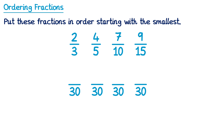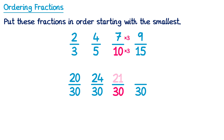So we're going to rewrite all of the fractions as something over 30. How do we get from 3 to 30? That's multiplied by 10, so we multiply the 2 on the top by 10 as well, which is 20. For 4 fifths, how do we get from 5 to 30? Multiplied by 6, so we multiply the 4 on top by 6 and 4 times 6 is 24. For 7 tenths, how do we get from 10 to 30? Multiplied by 3, so we multiply the 7 on top by 3, which is 21. And finally 9 fifteenths: from 15 to 30 is multiplied by 2, so we multiply the 9 on top by 2 and 9 times 2 is 18.